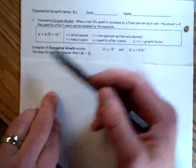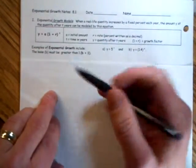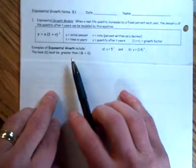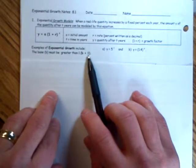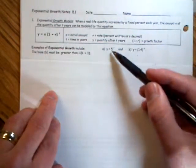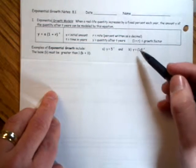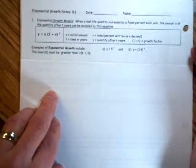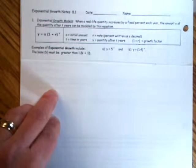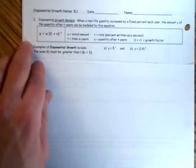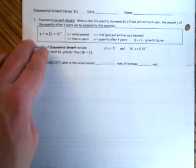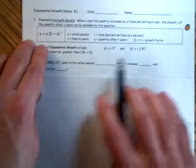Now, where it says examples of exponential growth include, it says the base b must be greater than 1. So b is greater than 1 as indicated here. 5 is greater than 1, that's the base here. 1.4 is greater than 1, so they satisfy that requirement. They're just examples.